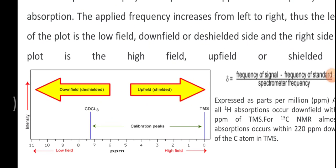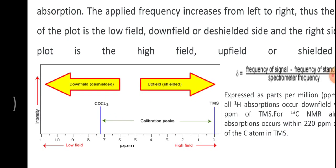What is the delta scale? In the NMR spectra, it is displayed as a plot of the applied radio frequency versus absorption. The applied frequency increases from left to right. The left side of the plot is the low field, that is downfield, also called deshielded. The right side of the plot is the high field, upfield or shielded side. This is called the delta scale.